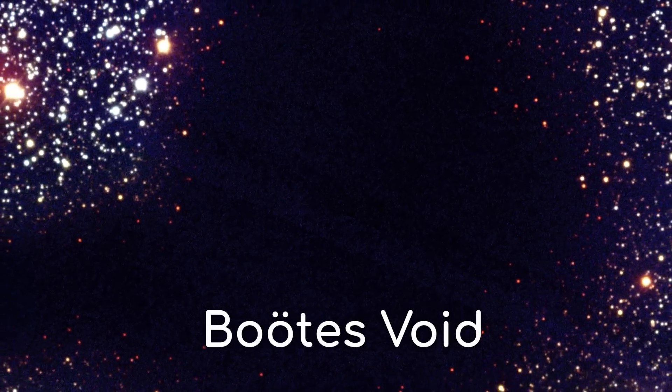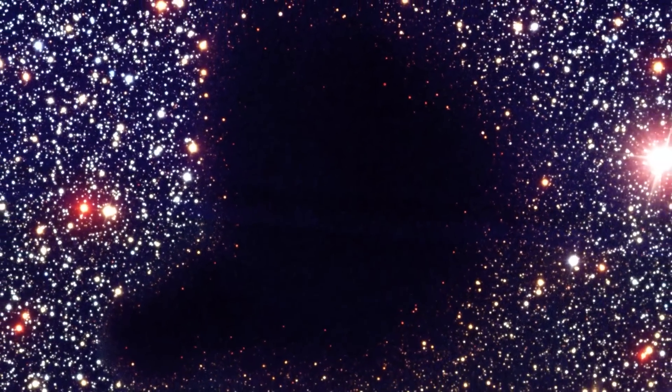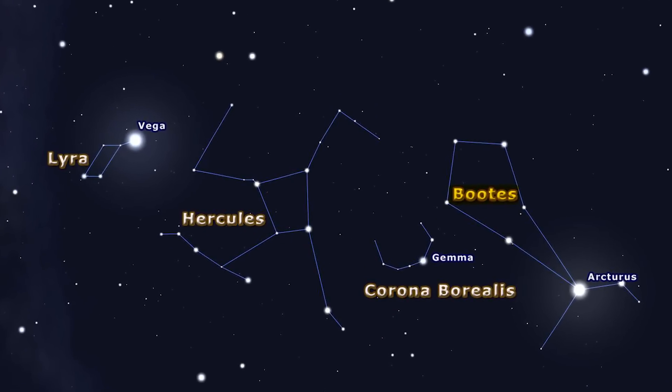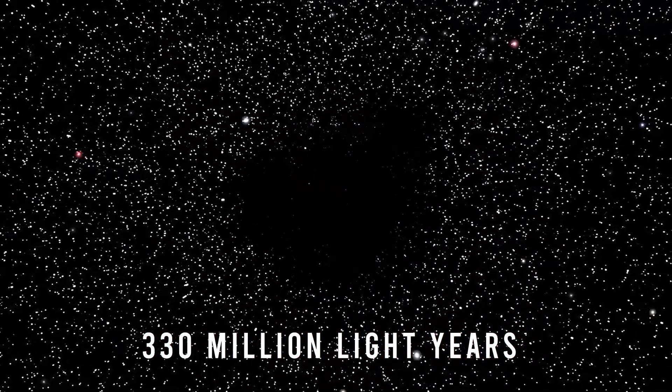The Boötes Void, aka the Great Nothing, is an enormous spherical region of space containing very few galaxies. It's located near the constellation Boötes. That's why we associate this region by this name. It's nearly 330 million light years in diameter.